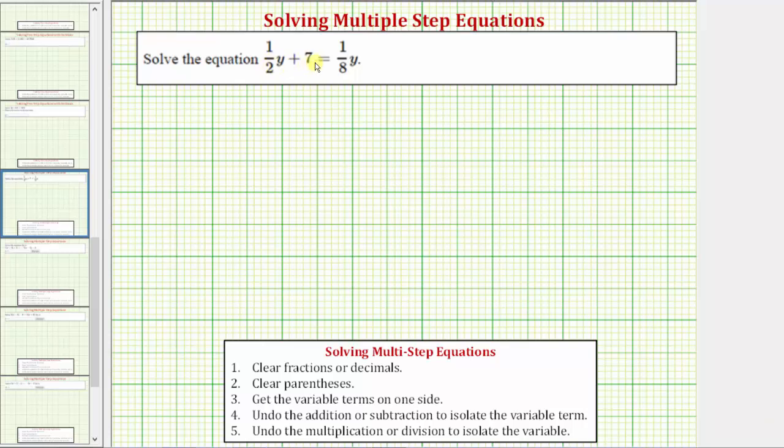We're going to solve the equation 1½y + 7 = 1⅛y. The solution is a value of y that makes the expression on the left side of the equation equal to the expression on the right.